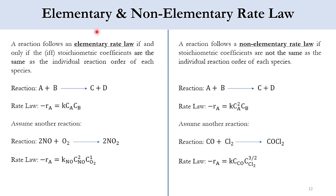Starting with the difference between elementary and non-elementary rate law: a reaction follows an elementary rate law if and only if the stoichiometric coefficients are the same as the individual reaction order of each species. For example, 1 mol of A reacts with 1 mol of B to produce 1 mol of C and 1 mol of D. If we write the rate law as -rA = K·CA·CB, the exponent of CA is 1 and CB is 1, both matching the stoichiometric coefficients. We say this is an elementary rate law.